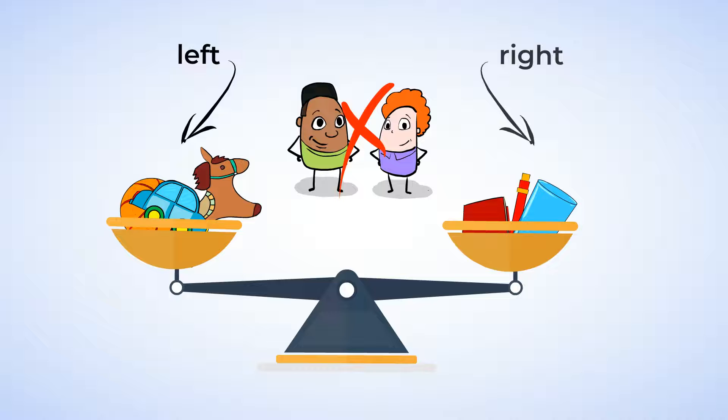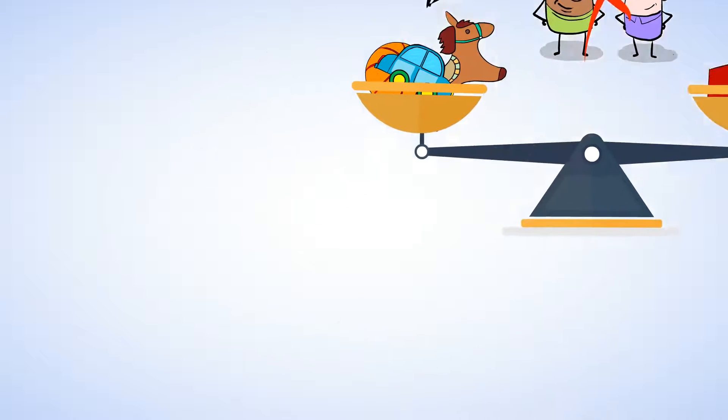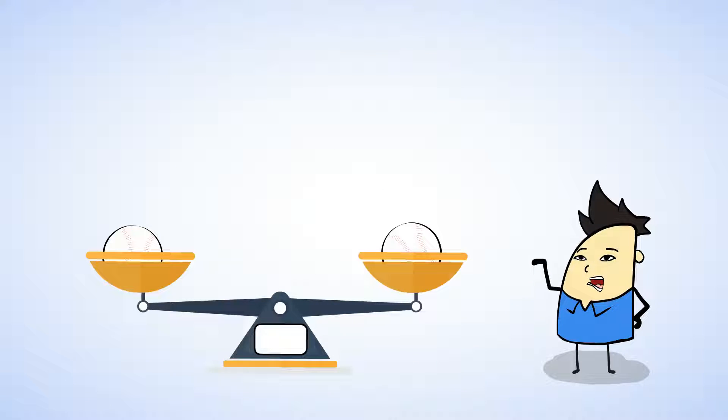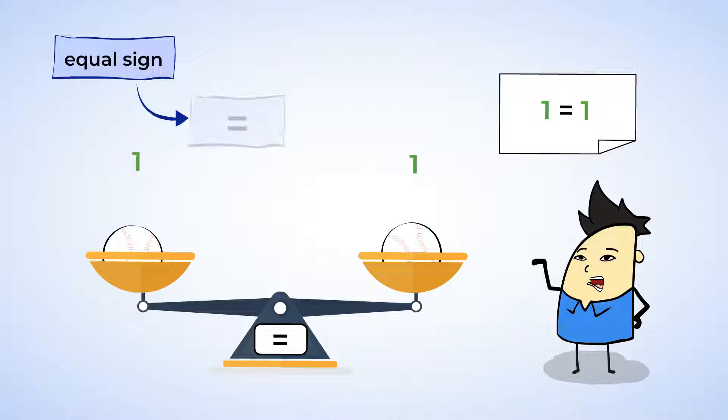Now this is the left side, and this is the right side. If we put one baseball on the left, and one baseball on the right, both sides will be next to each other. Because one and one are the same number. We can say that they're equal. We can use an equal sign to show that one side is the exact same amount as the other. One equals one.